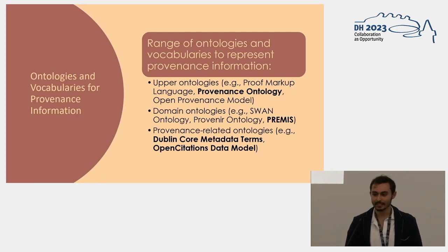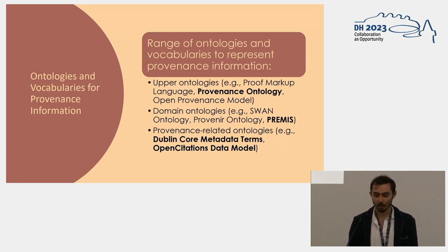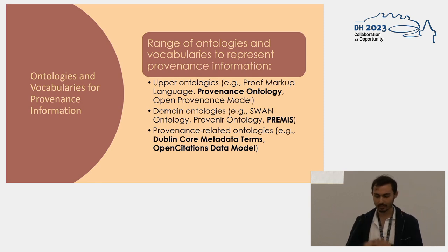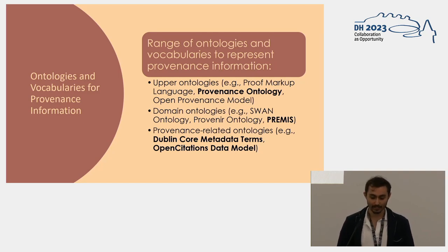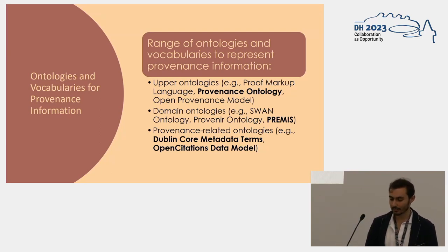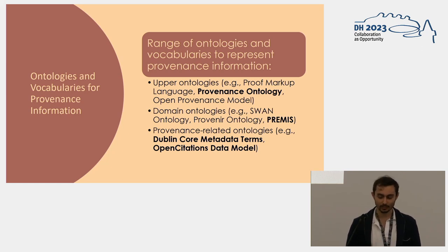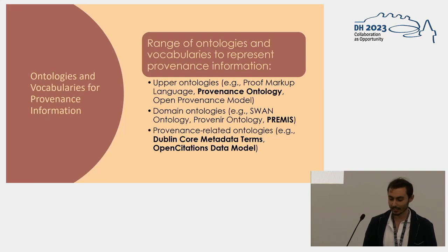Once you have a metadata model and an annotation syntax, you also need a vocabulary to express your provenance. There are upper ontologies — general ontologies you can also extend — the most important being the provenance ontology PROV-O, along with the proof markup language and the open provenance model. Then there are domain-specific ontologies such as PREMIS for digital archival objects, SWAN for biomedical objects, and others. There are also ontologies not created specifically for provenance but usable generically, such as Dublin Core and the open citations data model.